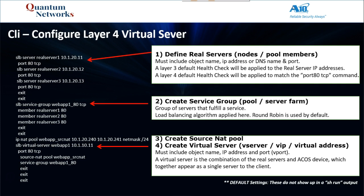Step four: create your virtual server — also called a V server by ATN, or a VIP or a virtual address. It must include an object name, an IP address, and a port. The port is often called a V port. Straight from the manual: a virtual server is the combination of the real servers and the ACOS device, which together appear as a single server to the client. Enough said.